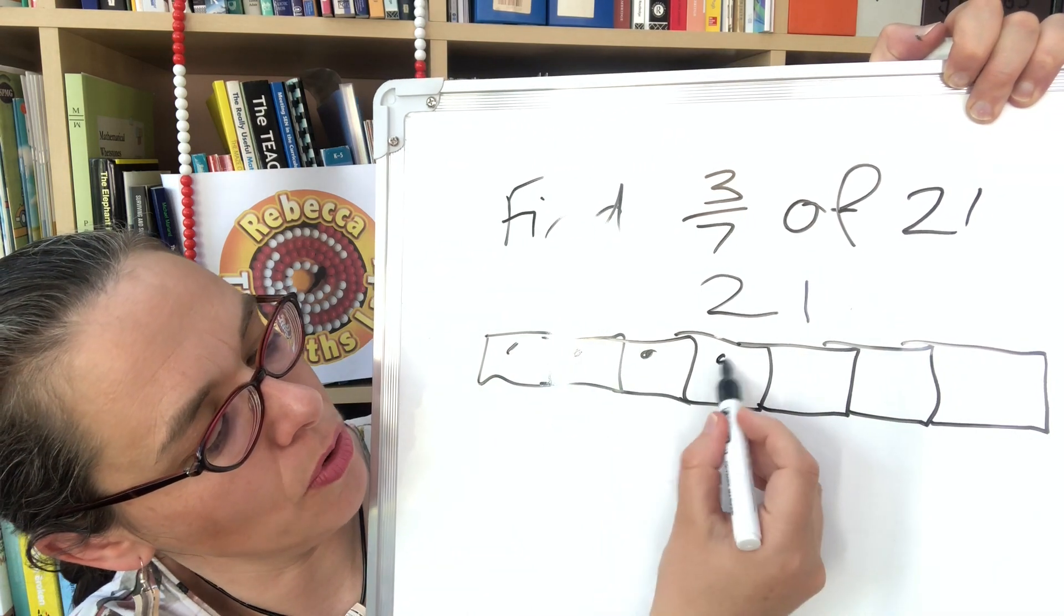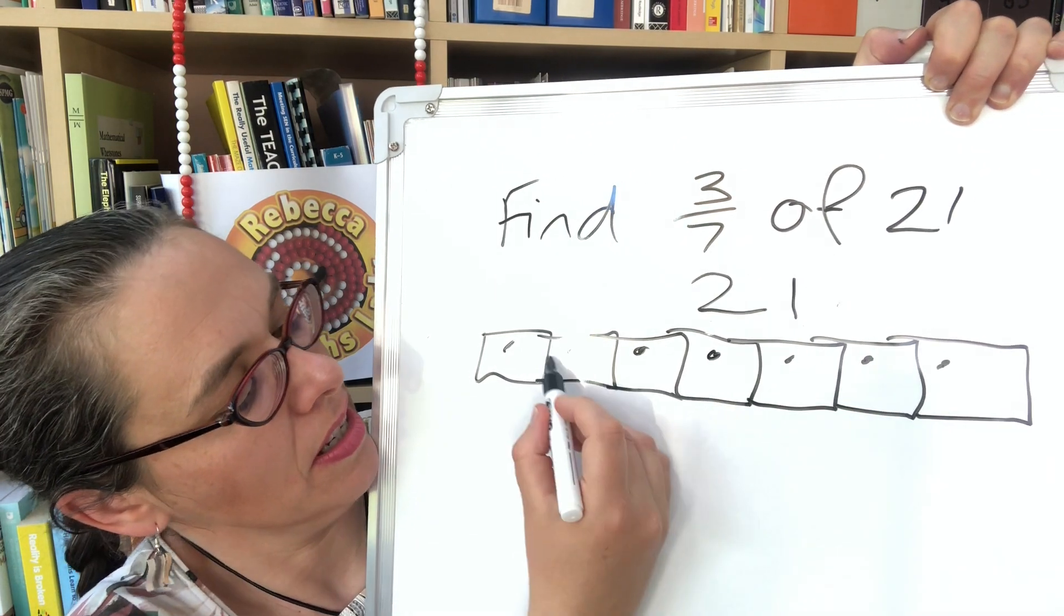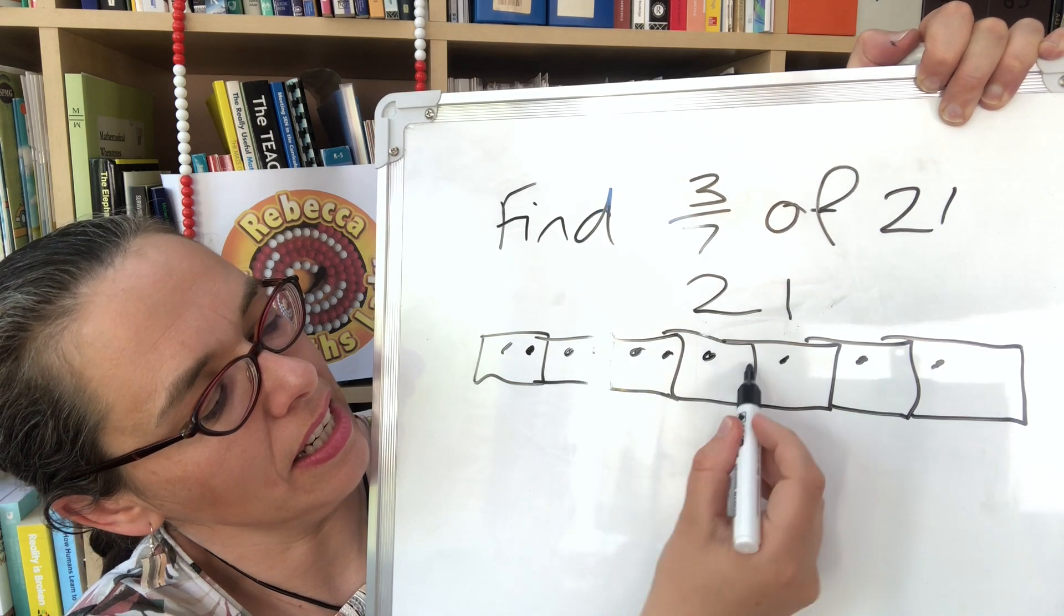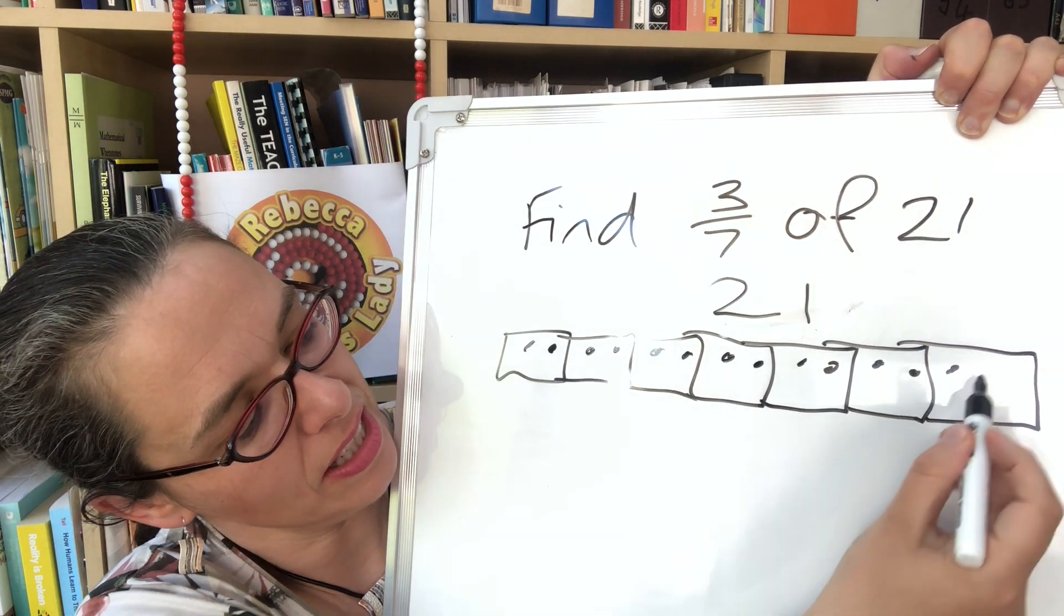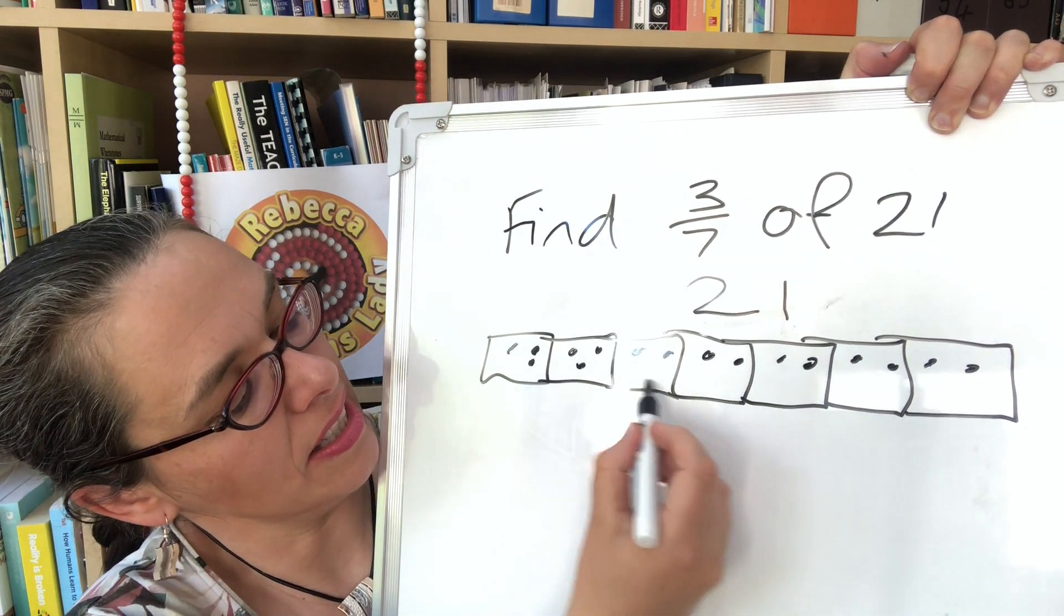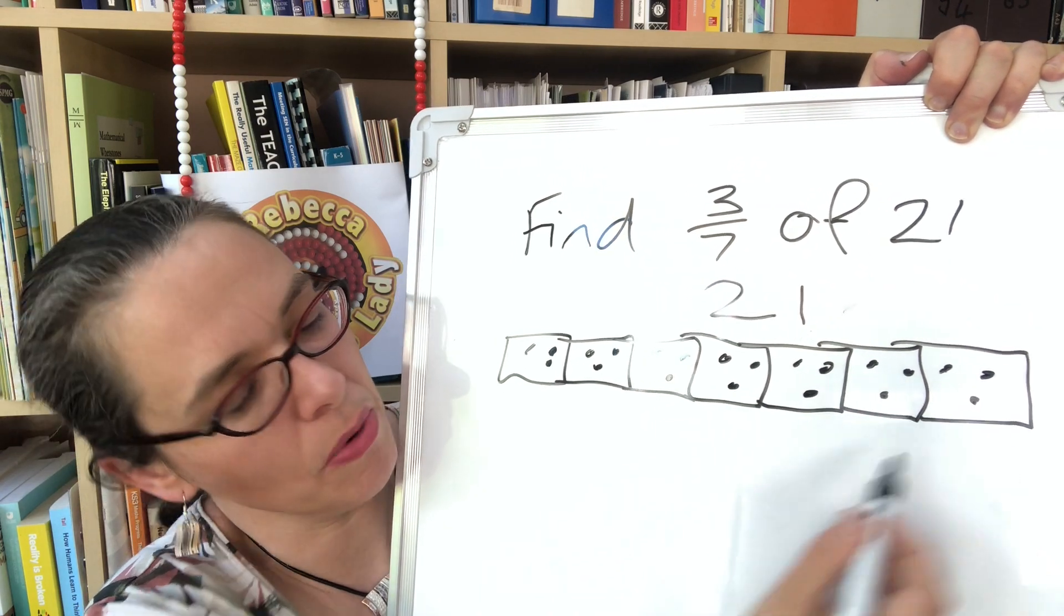1, 2, 3, 4, 5, 6, 7, 8, 9, 10, 11, 12, 13, 14, 15, 16, 17, 18, 19, 20, 21.